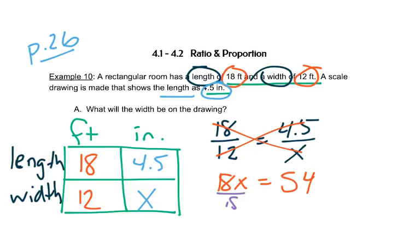Then divide both sides by 18, and we get X is 3. And because X is in the inches column, we know our units should be 3 inches.